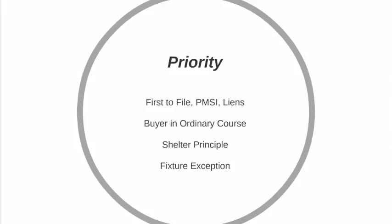We talk about liens and how they fit into the secured creditor scheme or regime. We talk about the protections of a buyer in the ordinary course who purchases land or collateral subject to a security interest and what protections exist for the buyer if they meet the requirements to qualify as a buyer in the ordinary course of business. We talk about the shelter principle as an additional protection to a purchaser of collateral that is used to secure a loan, and then we talk about the rules applicable to fixtures and how that applies within the secured loan collateral context.